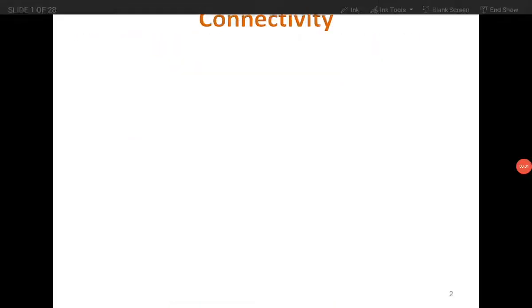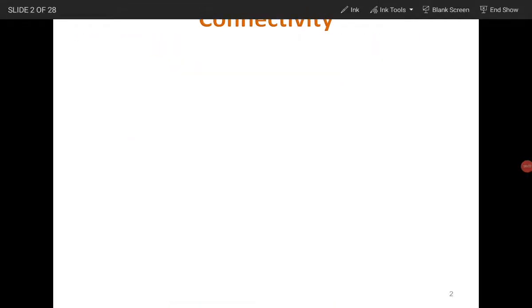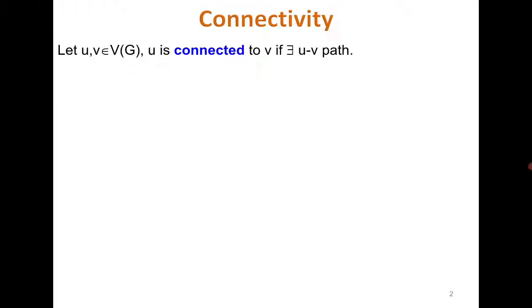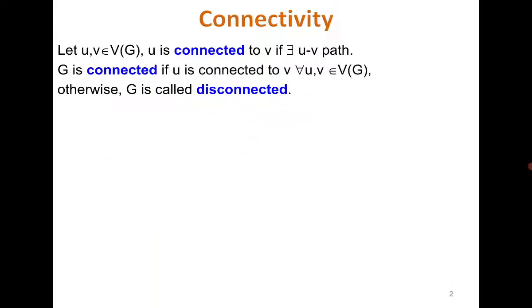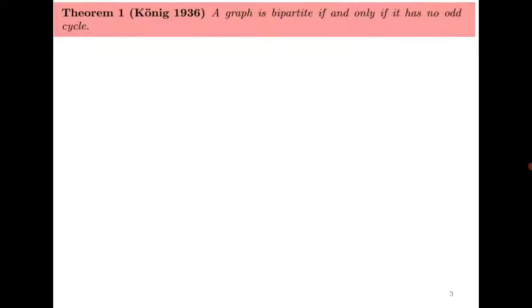Good morning everyone. In the last class we started with connected graphs. Two vertices are connected if there exists a path between vertices u and v, and a graph is connected if every pair of vertices is connected — meaning between every pair of vertices there exists a path; otherwise the graph is disconnected.